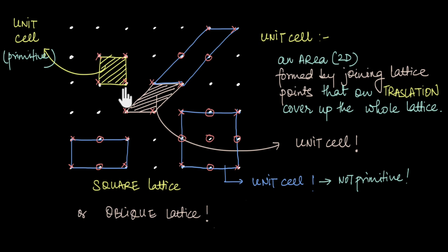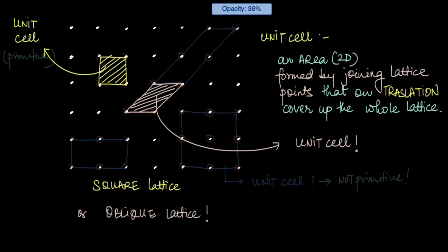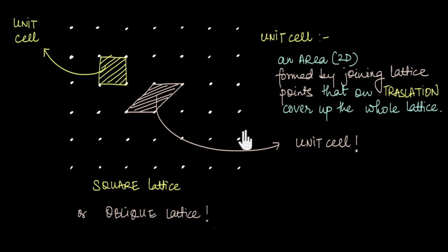All unit cells that have lattice points only at the corners are called primitive unit cells. While all others, which have lattice points at some other positions besides the corners, are not primitive. Because there can be many different non-primitive unit cells, we do not focus much on them, and instead we generally use primitive unit cells to describe our overall lattice. However, the non-primitive unit cells do play a role sometimes, and we'll talk more about this in a future video.